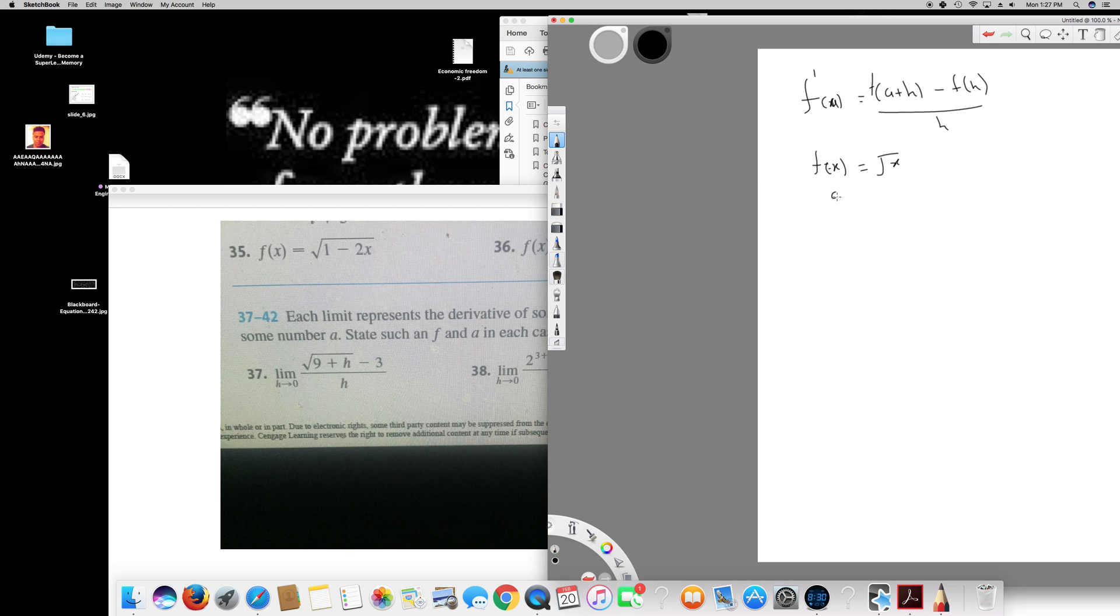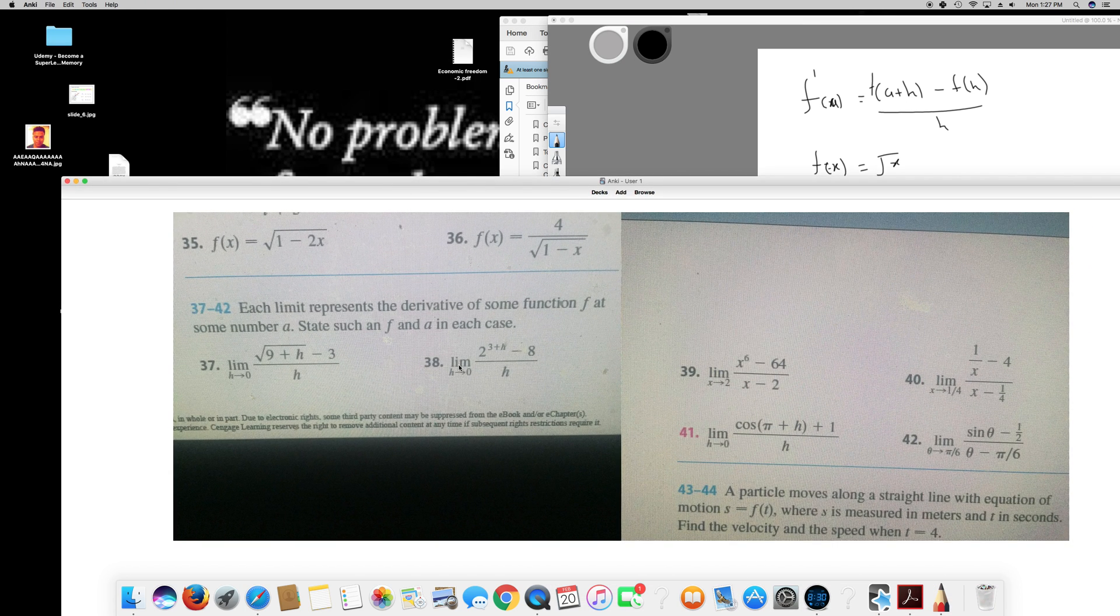That's the form and f of x is equal to square root of x, and a value is going to be 9. The second question, limit, so if you see this is f of x plus h, so it's going to be 2 to the power, actually f of x is 2 to the power of x.